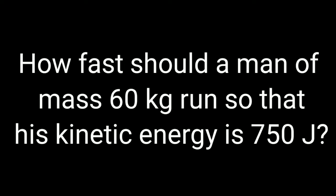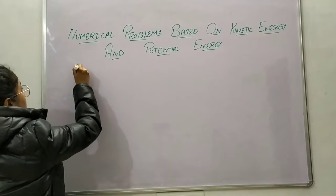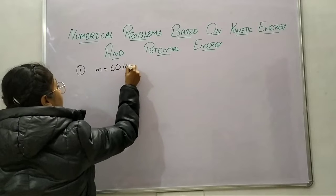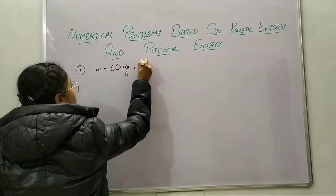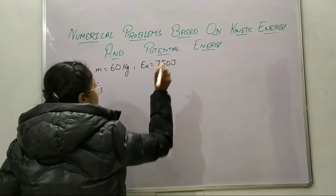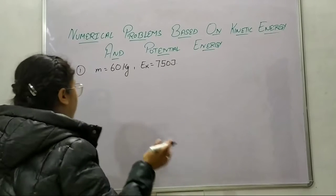We have the first problem: how fast should a man of mass 60 kilograms run so that his kinetic energy is 750 joule? In this problem we are given the mass of 60 kilograms and the kinetic energy of 750 joule. We need to find the speed or velocity of the man.